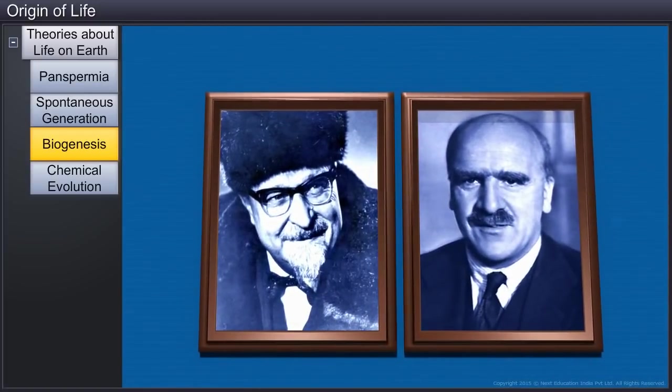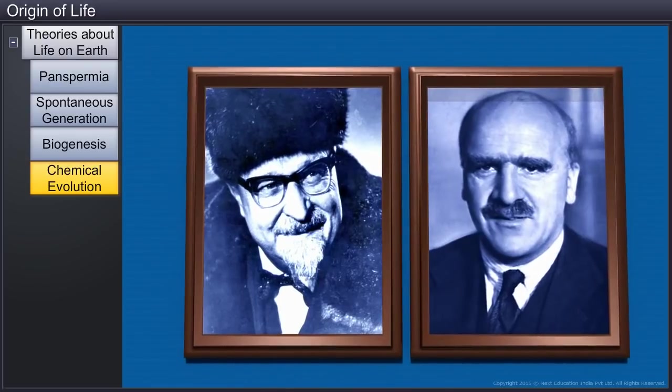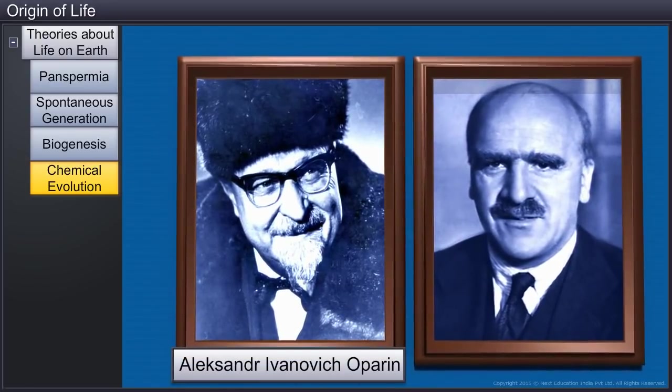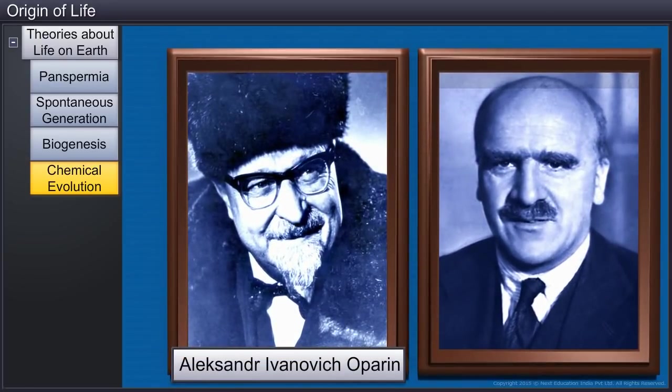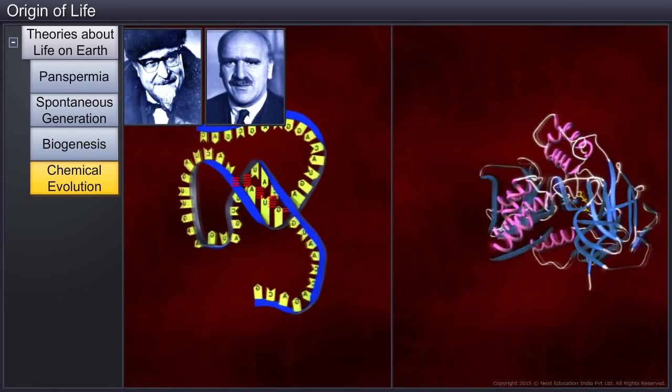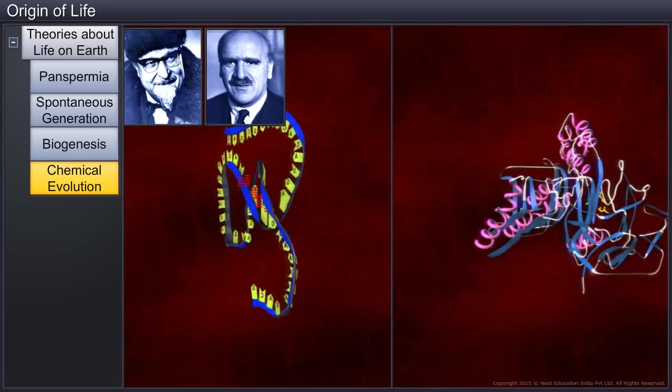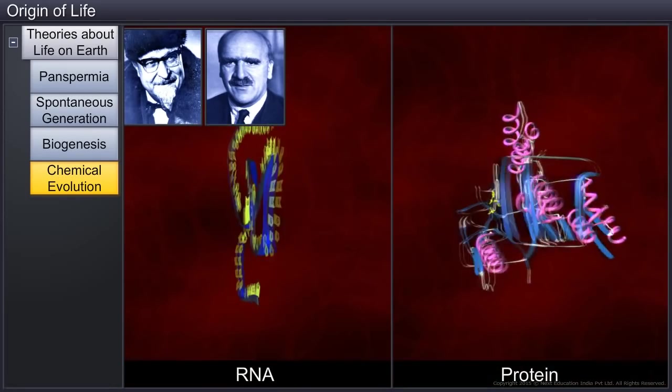Another theory, called the theory of chemical evolution, was expounded by Russian scientist Alexander Ivanovich Oparin and British scientist John Burden Sanderson Haldane. They proposed that the first form of life originated from pre-existing non-living organic molecules such as RNA and protein.